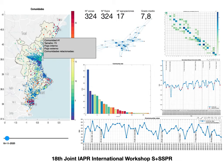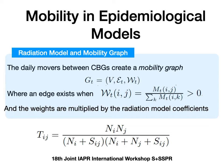Our mobility graph is created as follows. It is a weighted graph where we normalize the number of movers from one census block to another. We have an edge between node i and j if this normalization is non-zero. We weight this by what is called the radiation model. The radiation model takes into account, if you are going from i to j, the populations of locations placed between i and j, which is s_ij — the populations within a given radius around i. The idea is that weighting by this model smooths the weights, so we can make predictions in a more robust way.